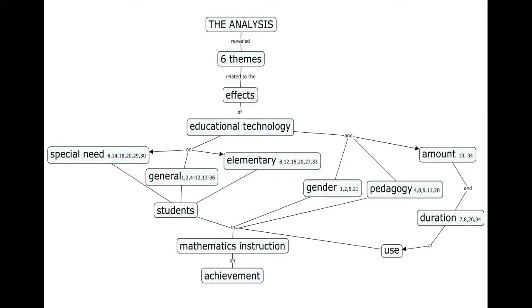From the studies included in this analysis, six themes emerged from the research related to the effects of educational technology in mathematics instruction on student achievement. They were: first, educational technology in mathematics instruction generally increases student achievement; second, it has a greater effect on students with special needs; third, it has a greater effect on the achievement of elementary students; fourth, it has a greater effect on students when linked to pedagogy; fifth, its effect on student achievement depends on gender; and sixth, its effect is dependent on the amount and duration of use.